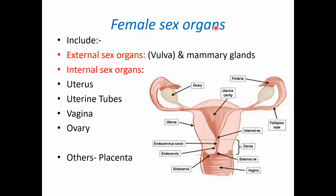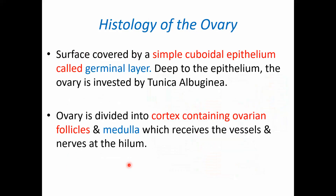The female sex organs include the external sex organs like the vulva and the mammary glands, and the internal sex organs — that is the uterus, uterine tubes, vagina, ovary, and the placenta.